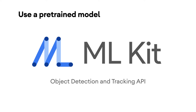ML Kit's object detection and tracking API is an easy solution if you want to use a pre-trained model. You can add an object detector into your app in just a few lines of code. I'll walk you through how to do it in the next video.